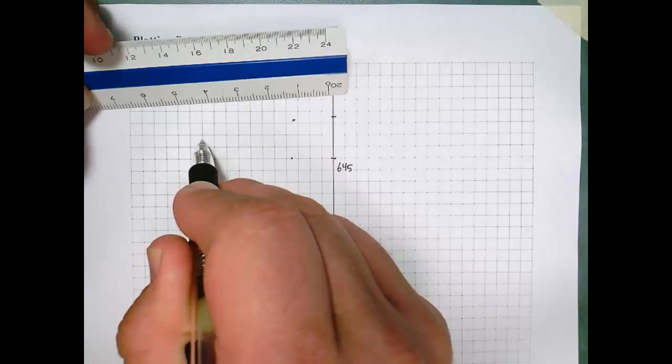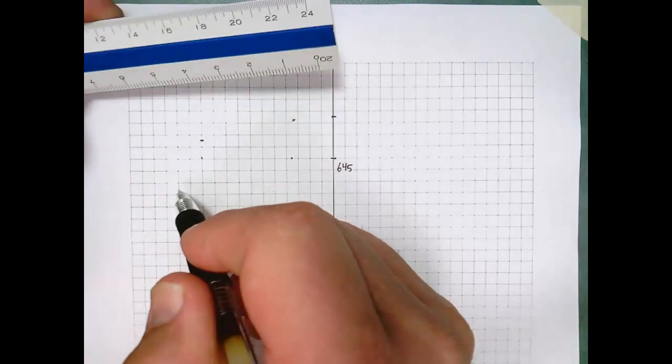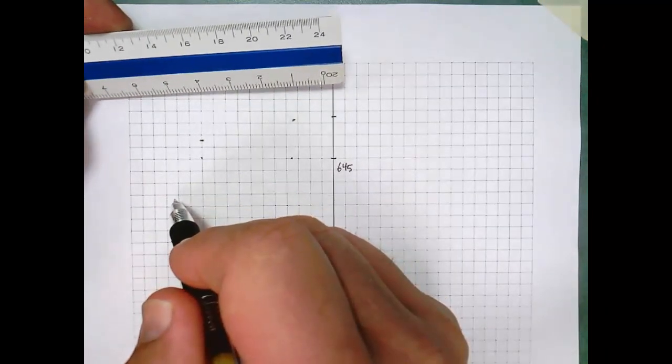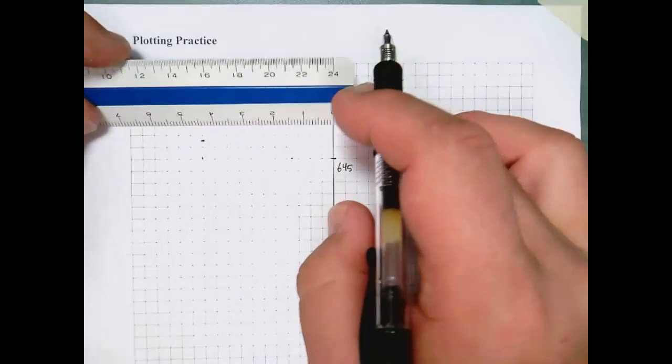So 648 will be halfway between, there we go. So that's where 648, the elevation, occurs at 44 feet left.